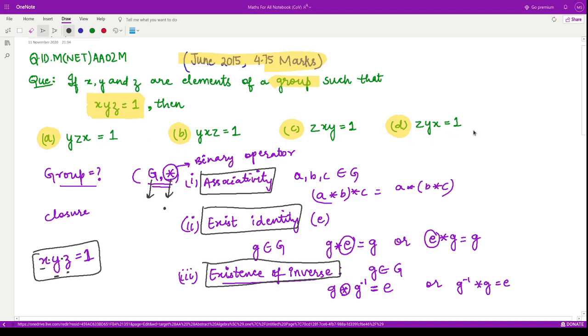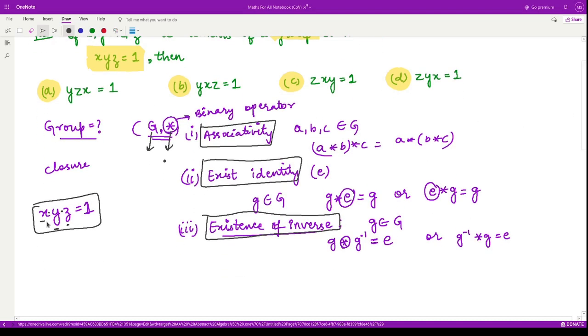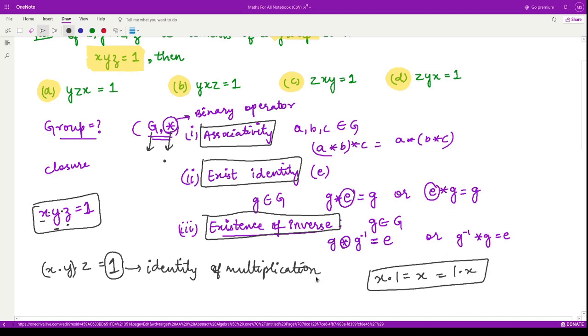Let us see which of the options is correct. Here we have x·y·z, so we can apply the brackets over here like this, and it is equal to 1. Do you know what this 1 is? 1 is the identity of multiplication—this is the multiplicative identity, because when you multiply any element by 1 you will get that element back.